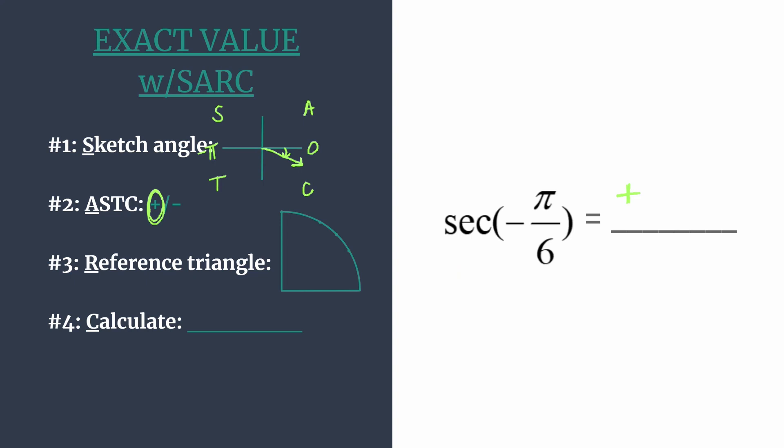In step three, we want to get the reference triangle so we can find the coordinates to work with. A reference angle is just the amount of rotation from terminal side to x-axis. And so we said we just rotated clockwise pi over six. Or if we're thinking in terms of special right triangles and degrees, that's just 30 degrees. So here is our special right triangle with a 30 degree angle right here. We know that's a 30, 60, 90 triangle.